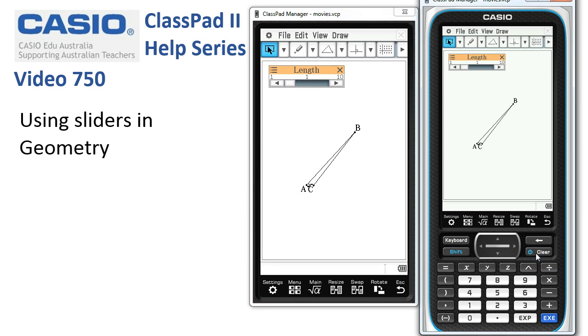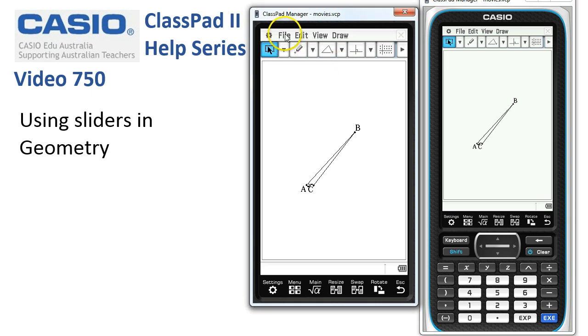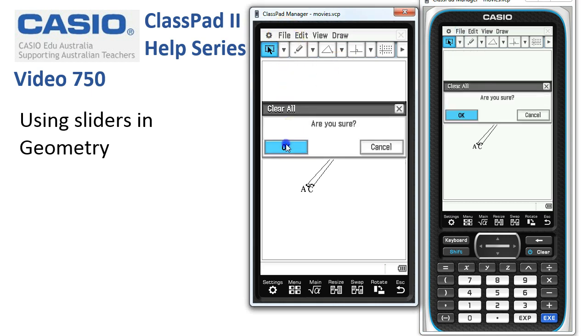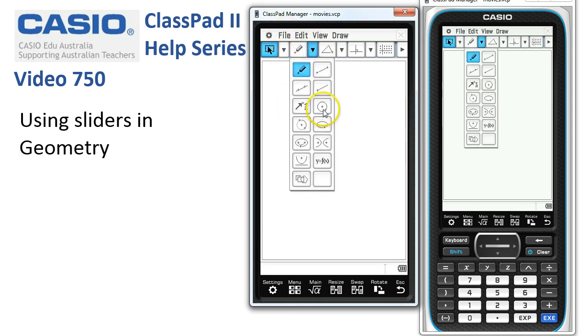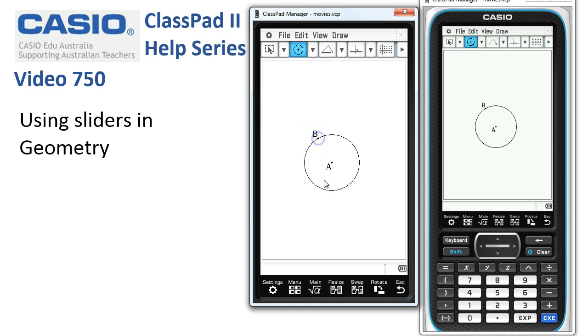So we can choose an angle, we can choose a length, and the other thing we can attach sliders to is the radius of a circle or an arc. So let's start again with a file new and we'll choose a circle. Here we go, I'll tap once for the center, once for the radius.